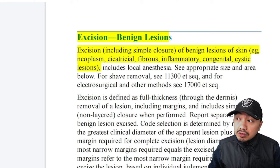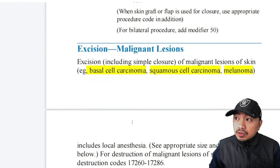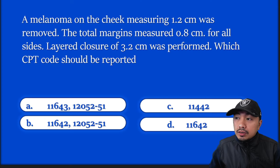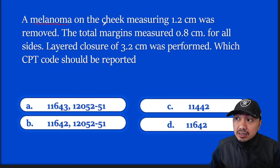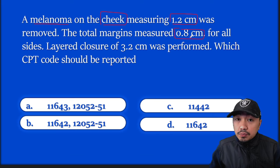Go to the 116xx code set to confirm. Under malignant lesions you have examples: basal cell carcinoma (BCC), squamous cell carcinoma (SCC), and melanoma. The melanoma is on the cheek. Check the size and site: the cheek is the location, and 1.2 centimeters is the lesion size. You must take the sum of the total margin size plus the lesion size: 1.2 cm + 0.8 cm = 2.0 centimeters total excised diameter.